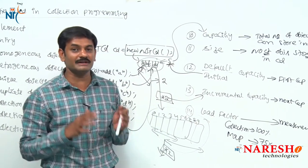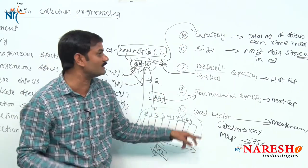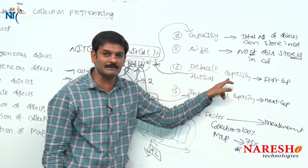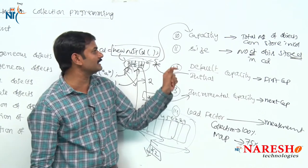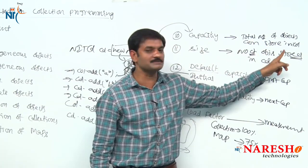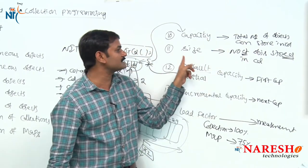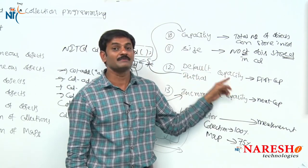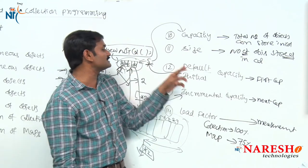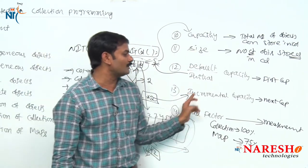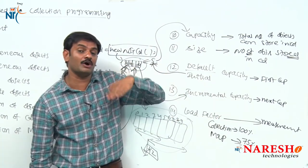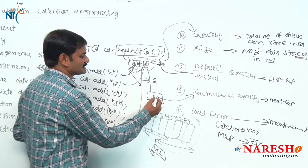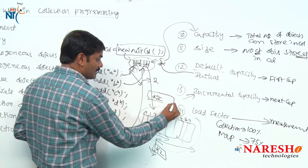Totally we have 14 terminologies. The last 5 terminologies are: capacity, size, default or initial capacity, incremental capacity, and load factor. Capacity: total number of objects that can be stored in a collection. Size: number of objects stored in a collection. Default or initial capacity: the first capacity with which the collection is created. Incremental capacity: the capacity by how much it has to grow to the next capacity — generally double or half.